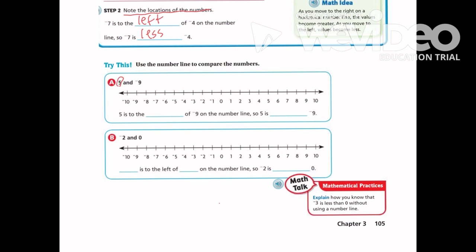We have positive 5 and negative 9. There's my positive 5 and my negative 9 right here. The 5 is to the right of negative 9, so 5 is greater than negative 9. Remember, when I go to the right numbers get bigger, and when I go to the left numbers get less.